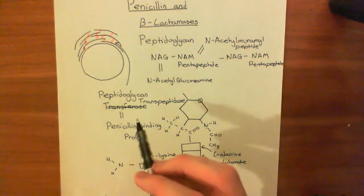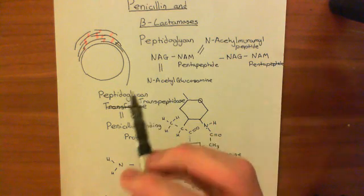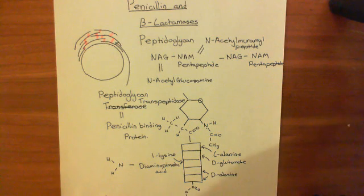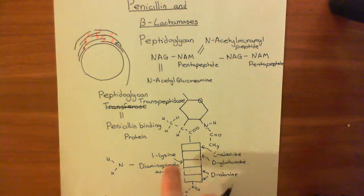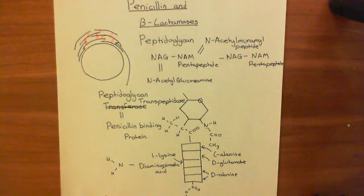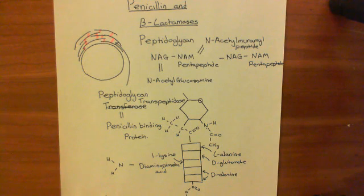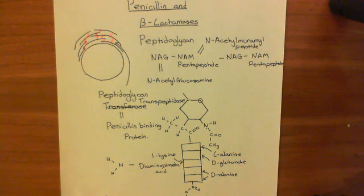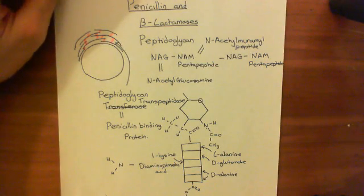What penicillins do is bind to this peptidoglycan transpeptidase and prevent it from functioning. The peptidoglycan transpeptidase mistakes the penicillin molecule for one of the pentapeptides and tries to catalyze the same reaction, but it can't break one of the bonds. Instead, the penicillin remains permanently bound to the peptidoglycan transpeptidase in the active site, permanently inactivating the enzyme. We'll call it there for this video and continue our discussion of penicillins and beta-lactamases in the next video.